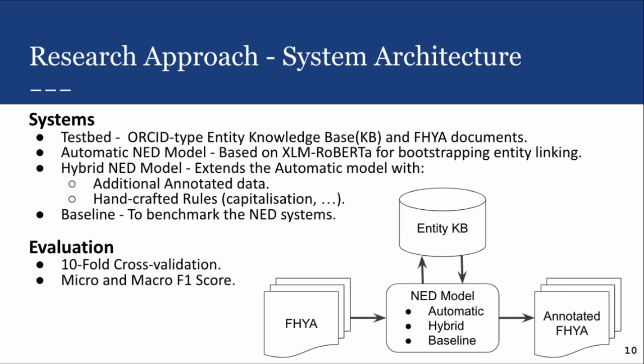Our system is built up of four main components. Firstly, a testbed, which consists of our knowledge base with entries of people and a subset of the 500-year archive documents which have been annotated using crowdsourcing. This required volunteers to go through the documents, identify names, and link them with people entries within our knowledge base. If there wasn't an entry for a person, the volunteers would also create new people entries.